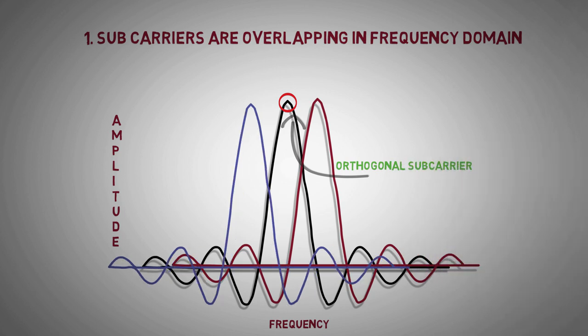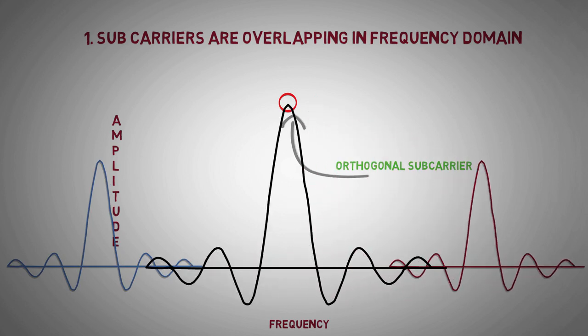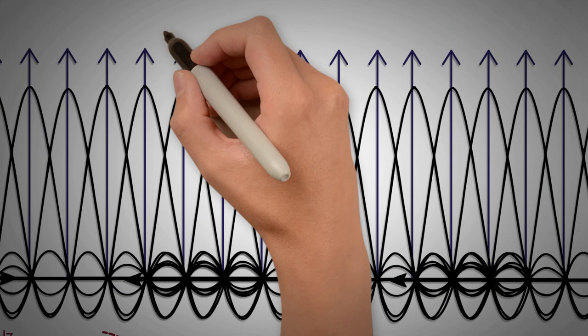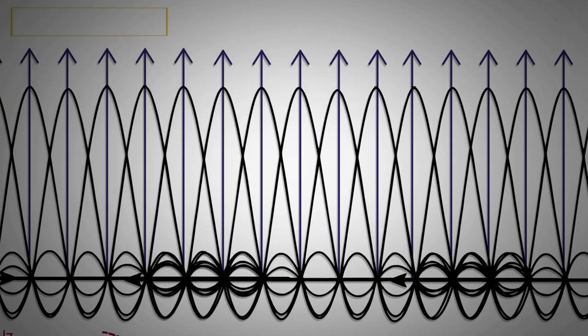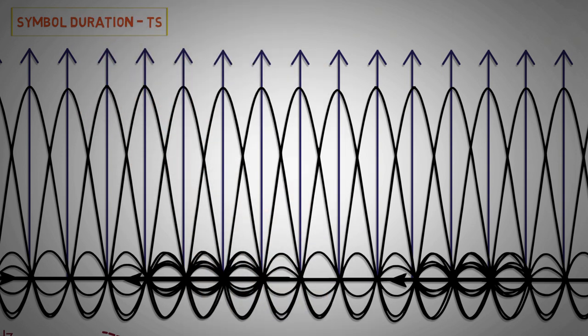As a result, a mobile can sample the frequency and phase without any interference from neighboring sub-carriers. Orthogonality is achieved by ensuring that all the sub-carriers have same symbol duration Ts, and the sub-carrier spacing is maintained at delta F equal to 1 by Ts.